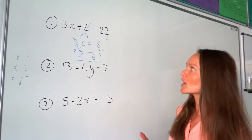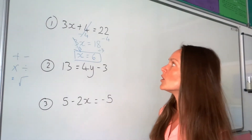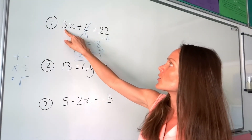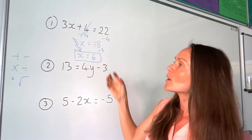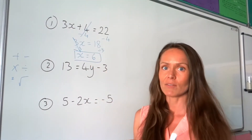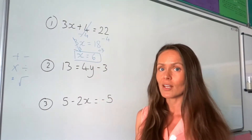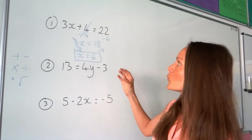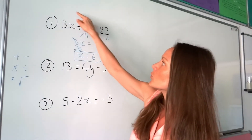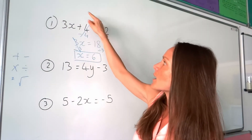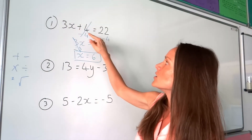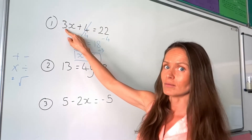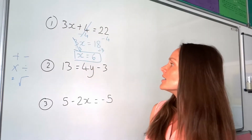Something I want to point out: some people try to divide by 3 first. Always leave whatever's closest to the letter until the end — work your way from the outside in. Get rid of the outer number before the one closest to x.